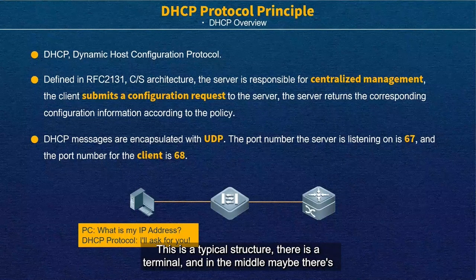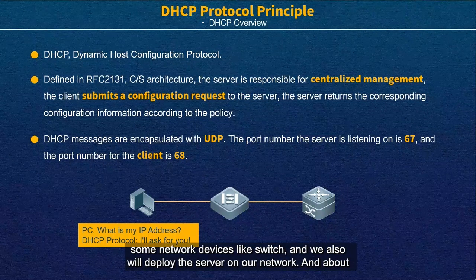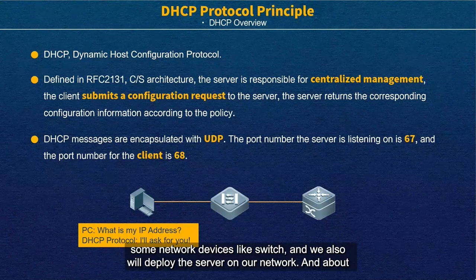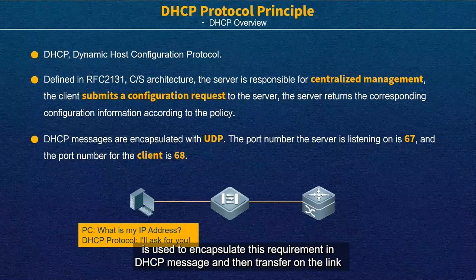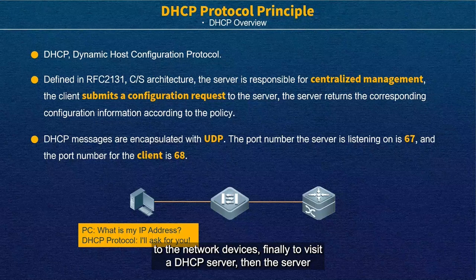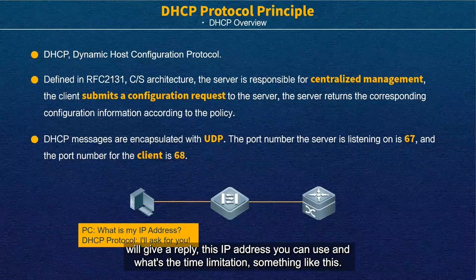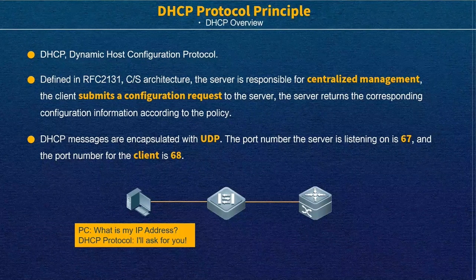This is a typical DHCP structure. There is a terminal, and in the middle there may be network devices like a switch. We also deploy a DHCP server on the network. The PC asks: what is my IP address, can you assign one? The request is encapsulated in a DHCP message and transferred through the network devices to the DHCP server, which then gives a reply with an IP address, lease time, and other parameters.